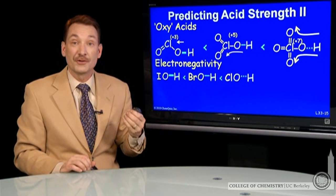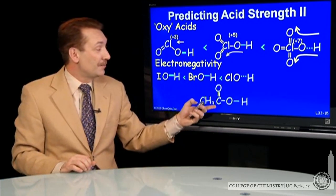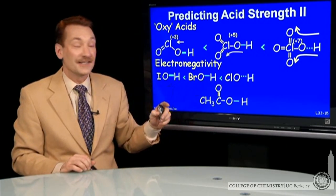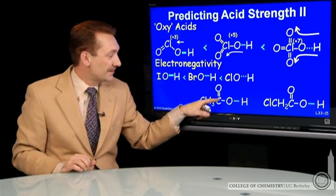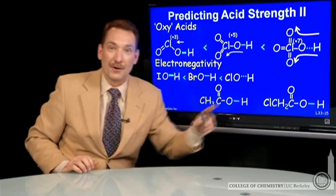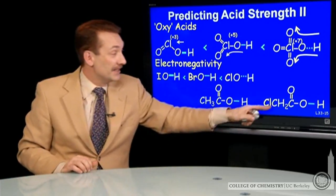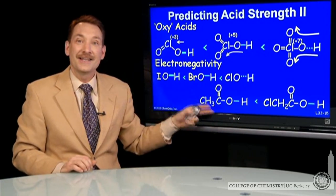This effect, this electron withdrawing group electronegativity, can be observed at a distance. Here's acetic acid and chloroacetic acid. A chlorine that's even several bonds away from the acidic proton can still have an effect. And indeed, chloroacetic acid is a stronger acid than acetic acid.